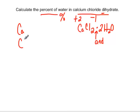We've got a calcium. We've got two chlorines. And we have two waters. So H2O, and then we're going to multiply that by two.